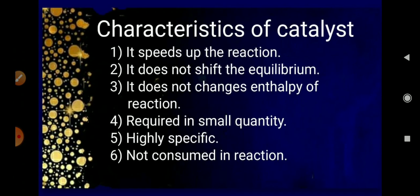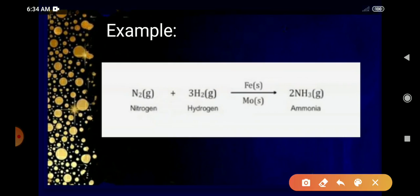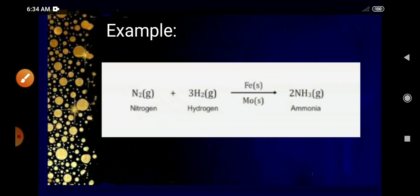Let us take a familiar example — the formation of ammonia. When nitrogen and hydrogen combine to form ammonia, this reaction takes place in the presence of iron. There is no product containing iron, which means the role of iron is only for increasing the rate of reaction. This reaction is slow in the absence of iron. Therefore, iron increases the rate of reaction and is a catalyst here.